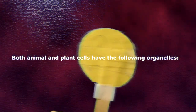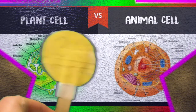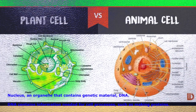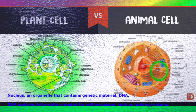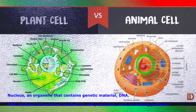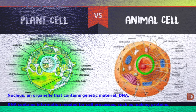Both animal and plant cells have the following organelles. Nucleus — an organelle that contains genetic material, DNA. DNA contains information needed for cell processes such as making proteins.